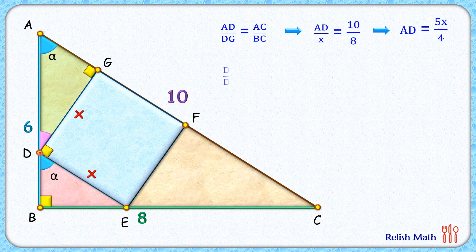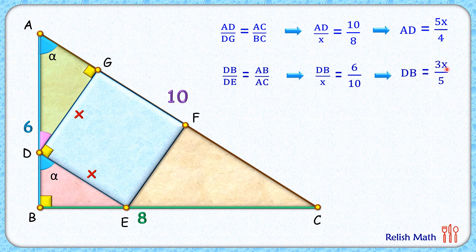So if we take here DB upon DE, that will be equal to AB upon AC. Putting the values here and solving it, we'll get DB in terms of x as 3x upon 5.